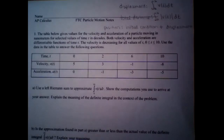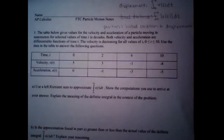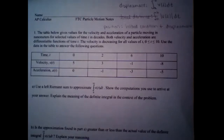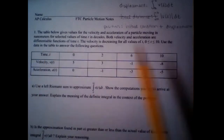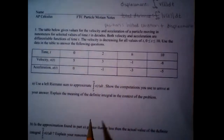We're going to practice a few of these. Number one: the table gives values of velocity and acceleration of a particle. I made up nanometers and decades as units just to be silly — I guess it's like a glacier. Remember, a particle is anything with motion — a bus, a car, a person, a cloud. Velocity and acceleration are differentiable, and velocity is decreasing across all values.